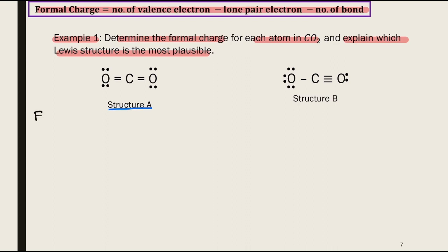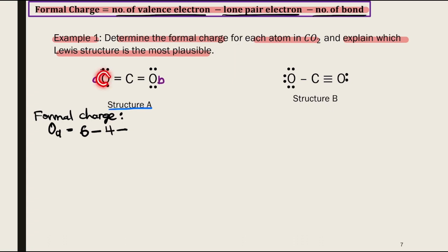Let's look at Structure A first. In Structure A we have two oxygen atoms, which we label as A and B. For oxygen labeled A: number of valence electrons is 6, minus 4 lone pair electrons, minus 2 bonds — so the formal charge for oxygen A is 0.